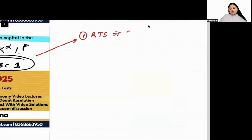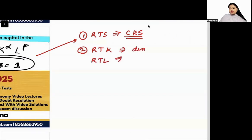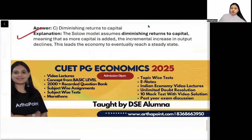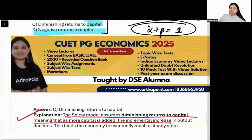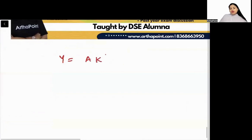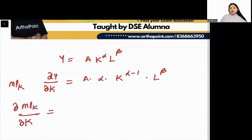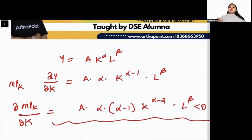Returns to scale is constant — a CRS production function. But returns to any individual input, meaning returns to capital or returns to labor, will be diminishing. So the Solow model assumes diminishing returns to capital. If we find the marginal product of capital from Y = A · K^α · L^β and then check how it changes as capital increases, we find it is less than zero — confirming diminishing returns to capital.